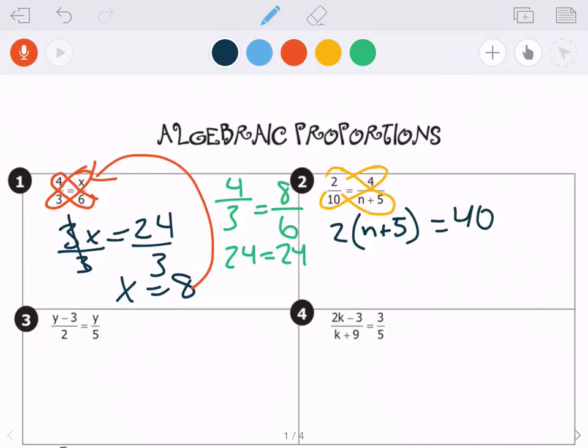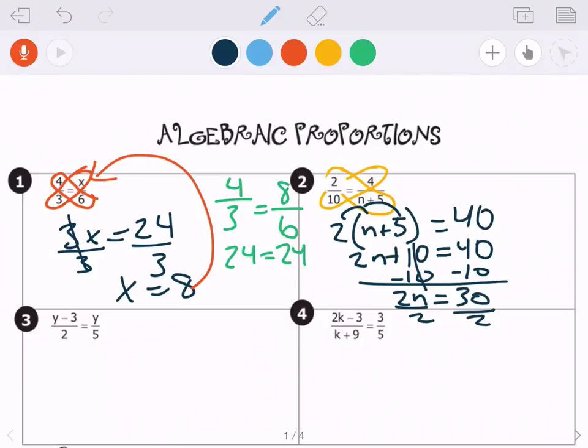So I have a little bit more work to do with this problem. We went over the distributive property, so I need to distribute the 2 to the n and the 5. So that's 2n plus 10 equals 40. So now we need to subtract 10 from both sides. So we're left with 2n equals 30. And then the opposite of 2 times n, we need to use division. So when we divide both sides by 2, we get n equals 15.